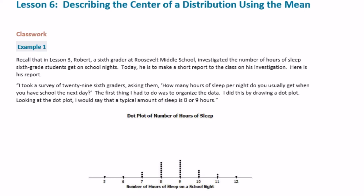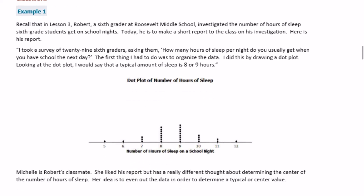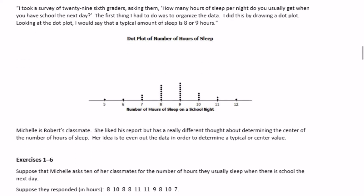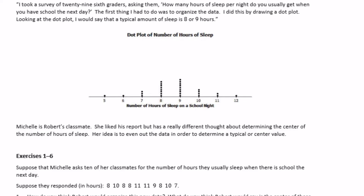6th grade module 6, lesson 6, classwork example 1. Recall that in lesson 3, Robert, a 6th grader at Roosevelt Middle School, investigated the number of hours of sleep 6th grade students get on school nights. Here's his report: he took a survey of 29 6th graders, organized the data using a dot plot, and said the typical amount of sleep is eight or nine hours — which is in the middle of the distribution.